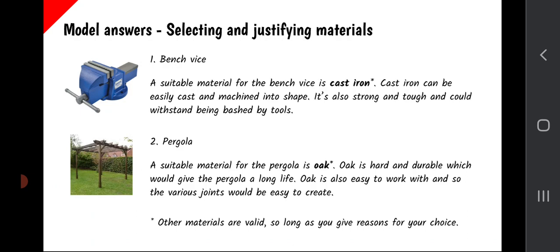For the pergola example: a suitable material is oak. Oak is hard and durable, which would give the pergola a long life. Oak is also easy to work with, so the various joints would be easy to create. Again, other answers are possible, but your justification must mention the properties of the material and relate them to something in the photograph — talk about the object itself. Now you know the strategy for answering materials questions. There are many in the past papers — go and have a try!